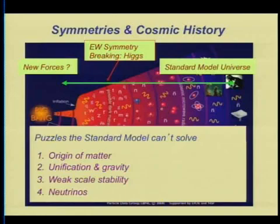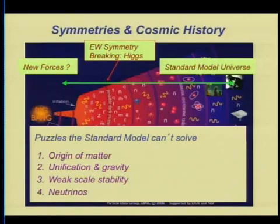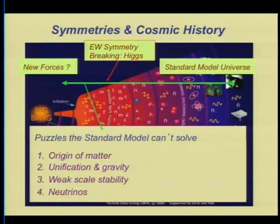How is gravity unified with the other forces? Why is the time at which symmetry was broken in the standard model — 10 picoseconds after the Big Bang — actually so late? There are good reasons to think it ought to have been much earlier; what stabilizes that late time? That's the weak scale stability problem. The properties of neutrinos are also difficult to account for within the minimal standard model.